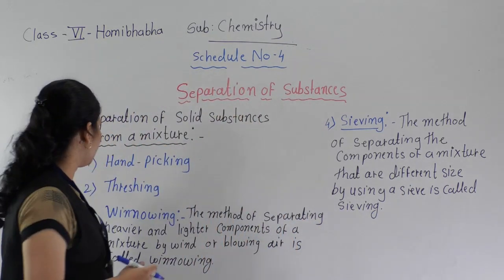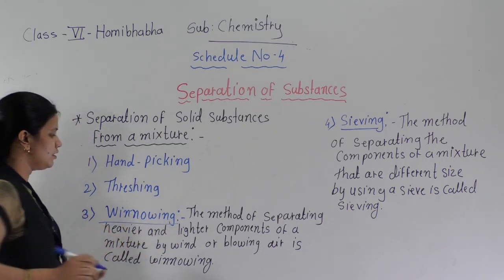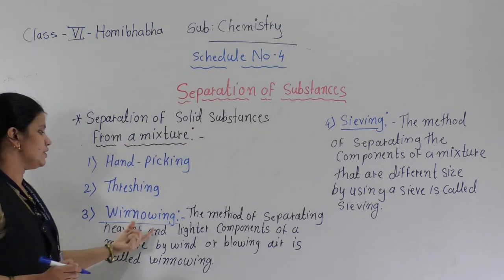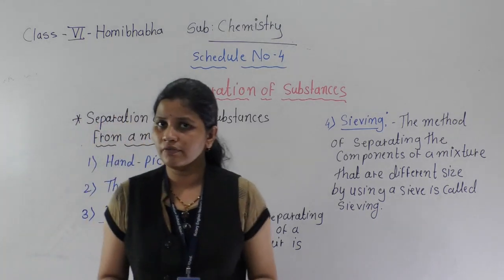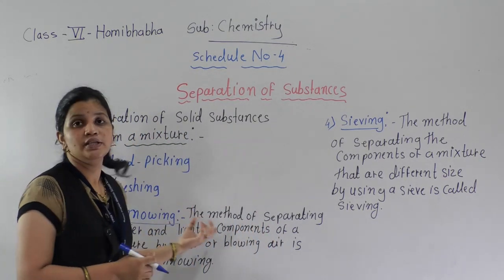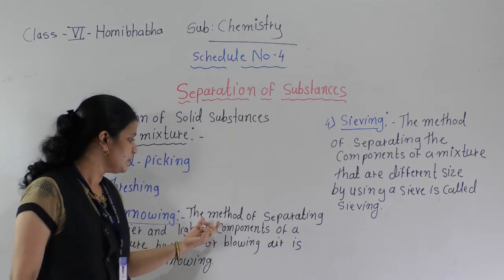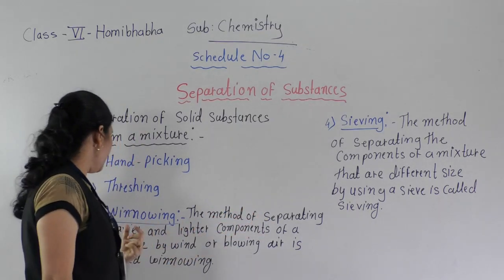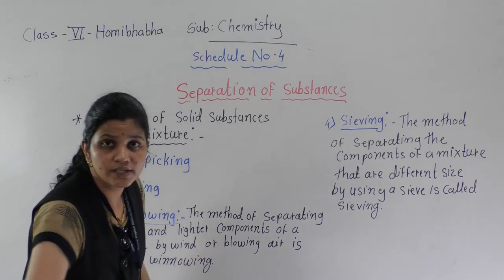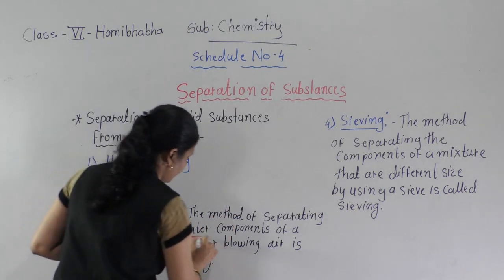The next method is winnowing — the third method to separate solid substances. Winnowing means what, and where is this method used? First we will see the definition of winnowing. The method of separating heavier and lighter components — these two words are very important: heavier and lighter. When this method is used, it separates heavier and lighter components.